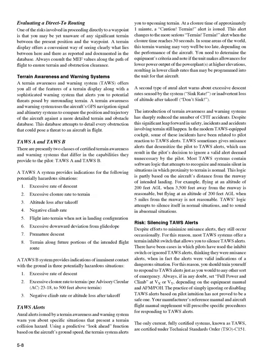Evaluating a direct-to routing: one of the risks involved in proceeding directly to a waypoint is that you may be unaware of any significant terrain between the present position and the waypoint. A terrain display offers a convenient way of seeing clearly what lies between here and there as reported and documented in the database. Always consult the MEF values along the path of flight to ensure terrain and obstruction clearance. A Terrain Awareness and Warning System, TAWS, offers you all of the features of a terrain display along with a sophisticated warning system that alerts you to potential threats posed by surrounding terrain.